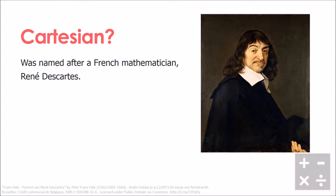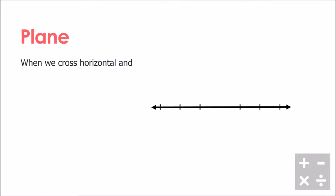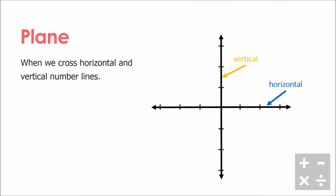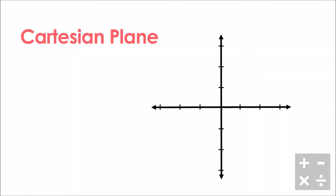First off, let's start with what a plane is — and this is not the one we see flying in the sky or take on a trip. A plane is what we get when we cross a horizontal number line and a vertical number line with one another. You've probably seen something like this before, and the Cartesian plane is exactly that.